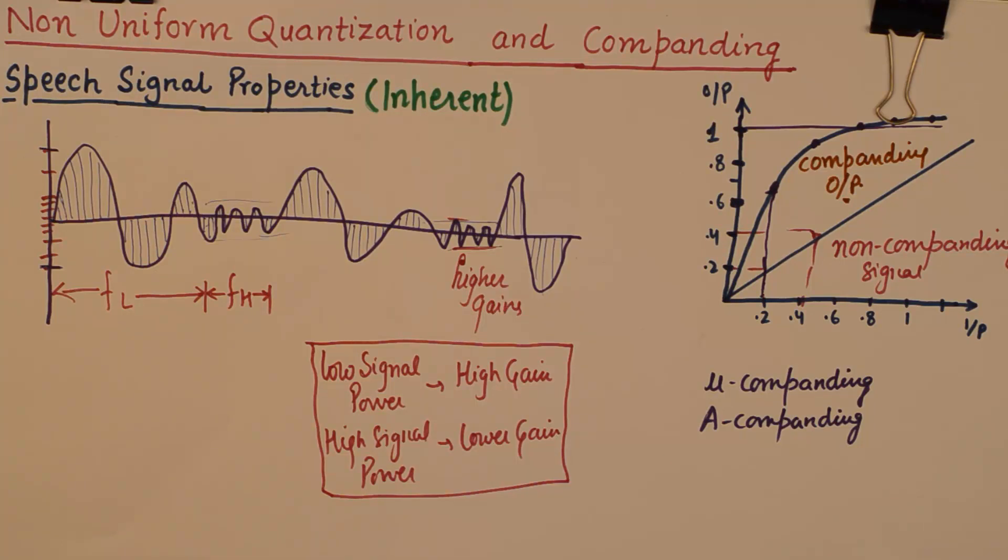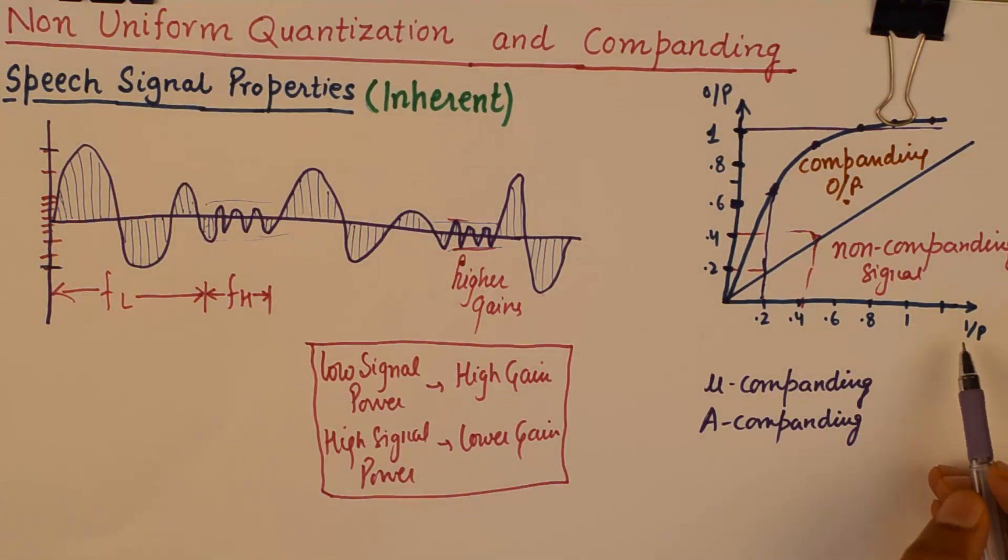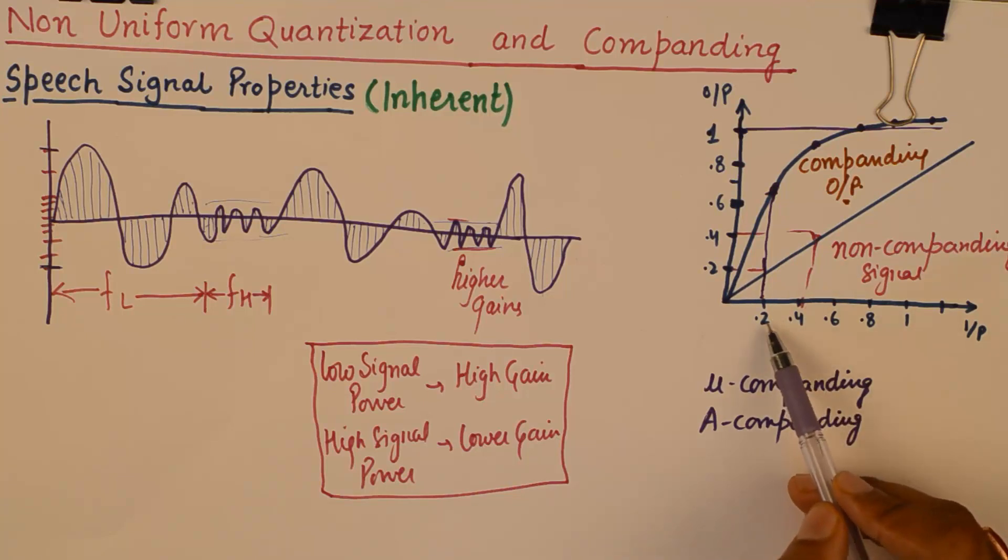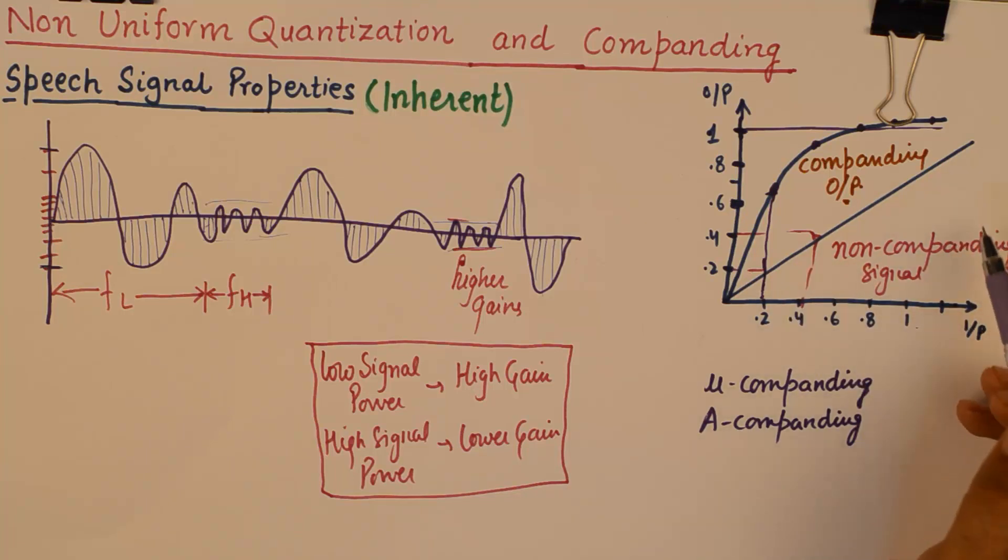So, a typical example of companding can be understood from this graph. Now, if you are inputting a signal, a wideband signal to a compander that will have various components ranging from lower power to the higher power.